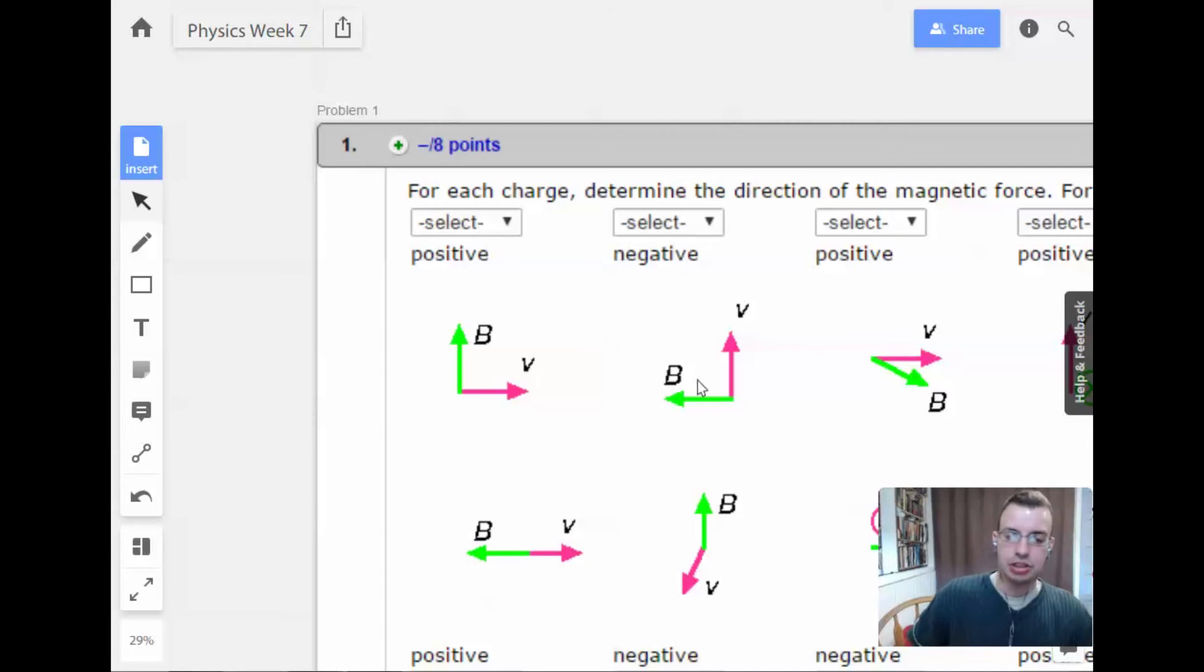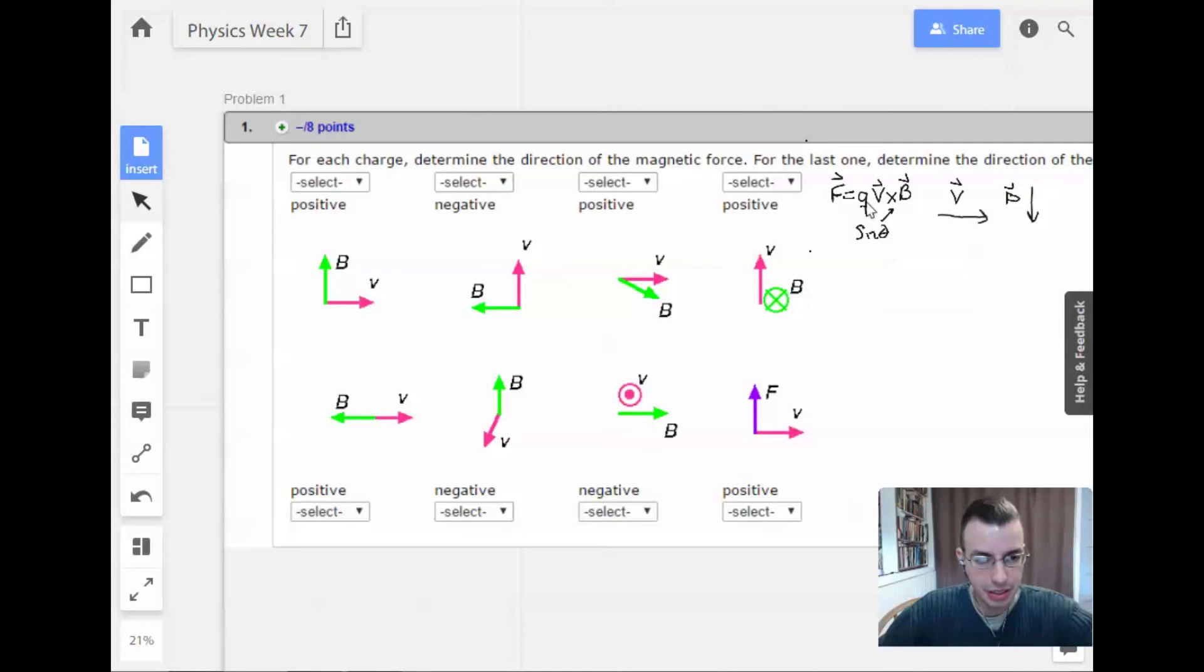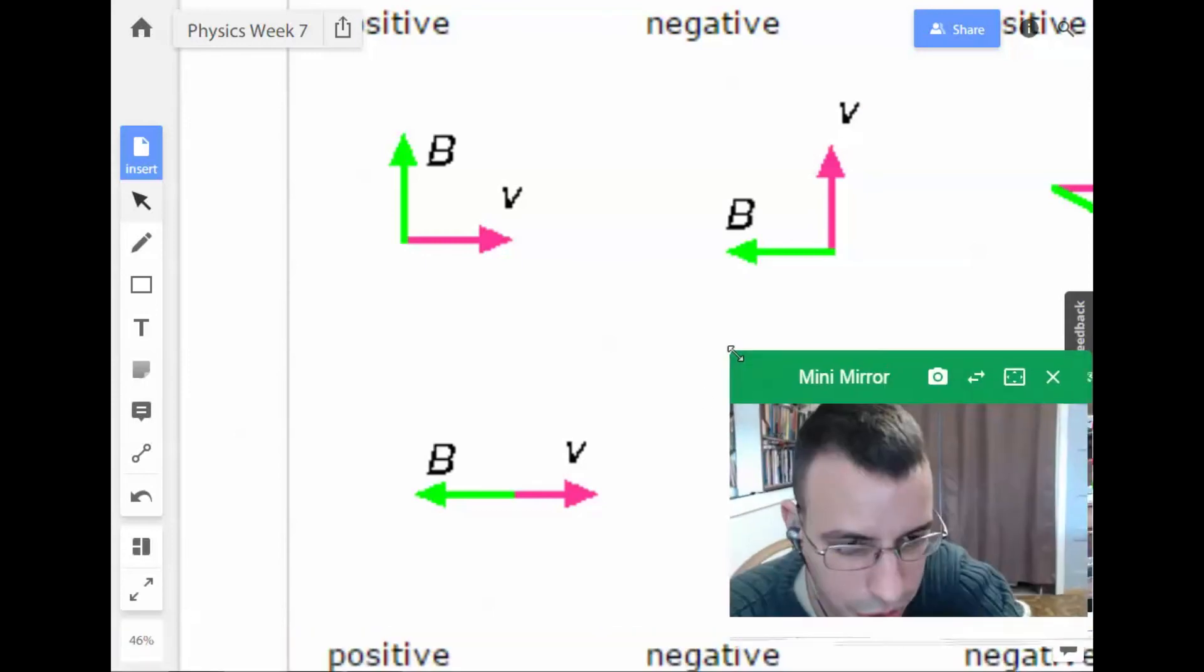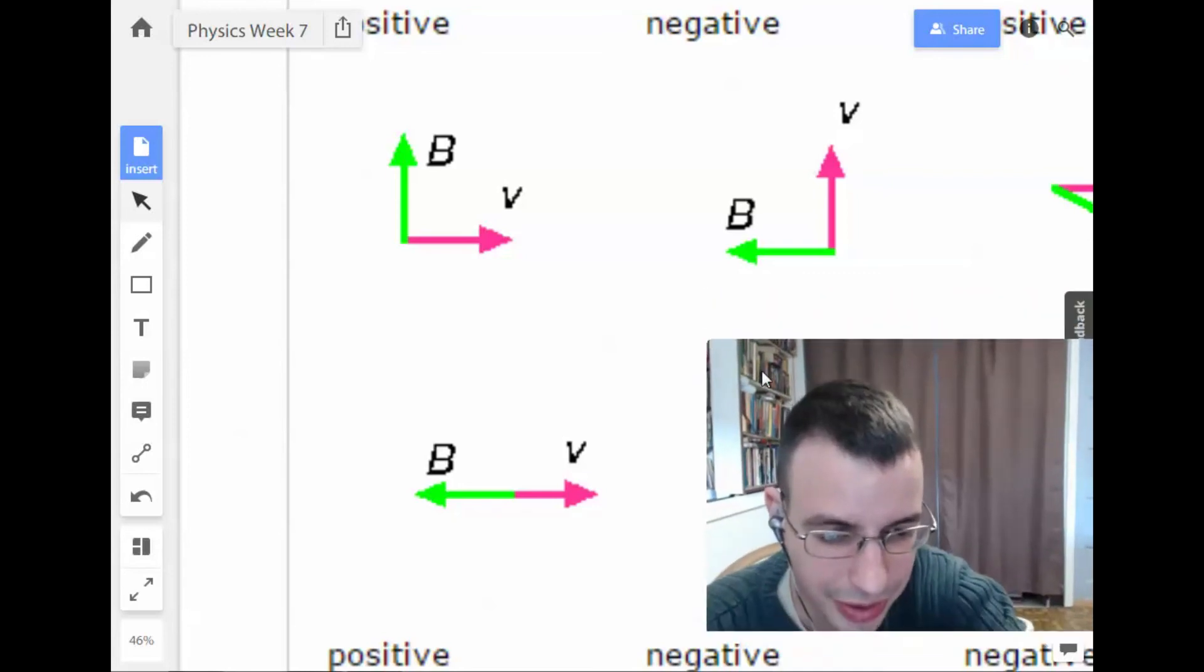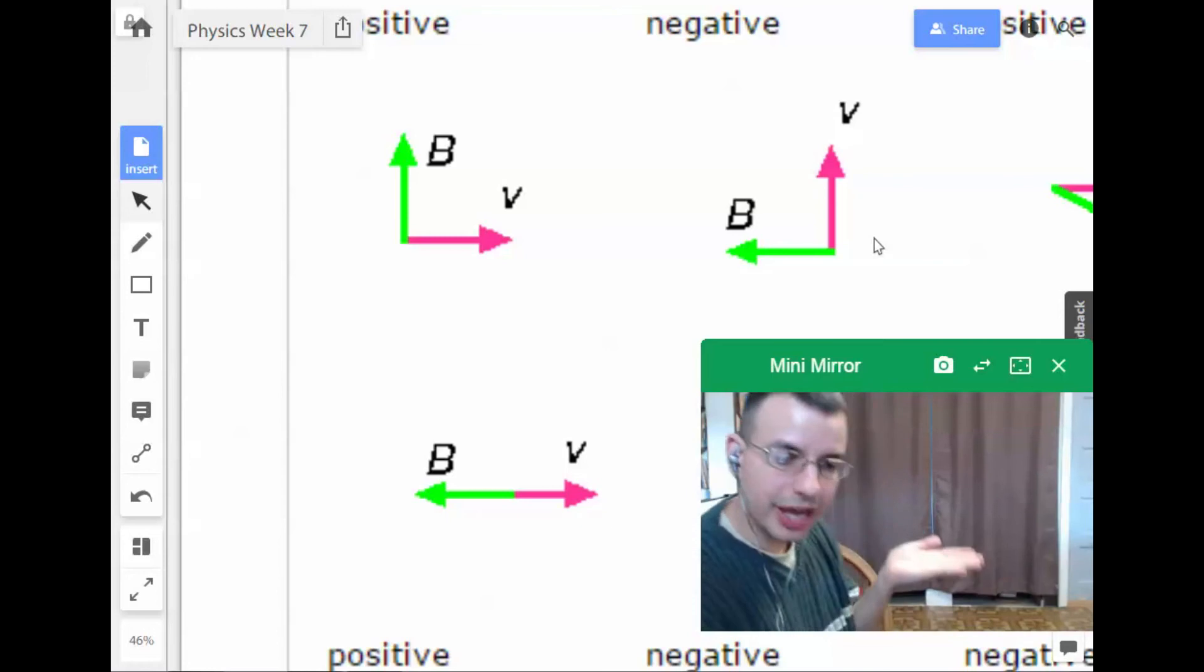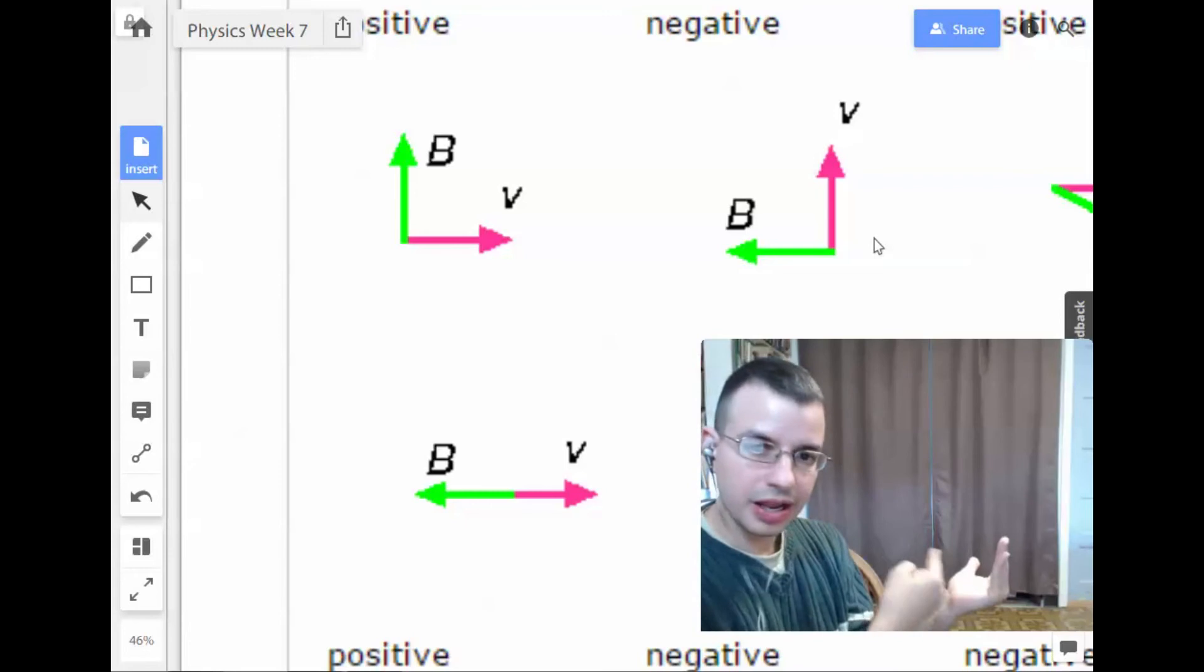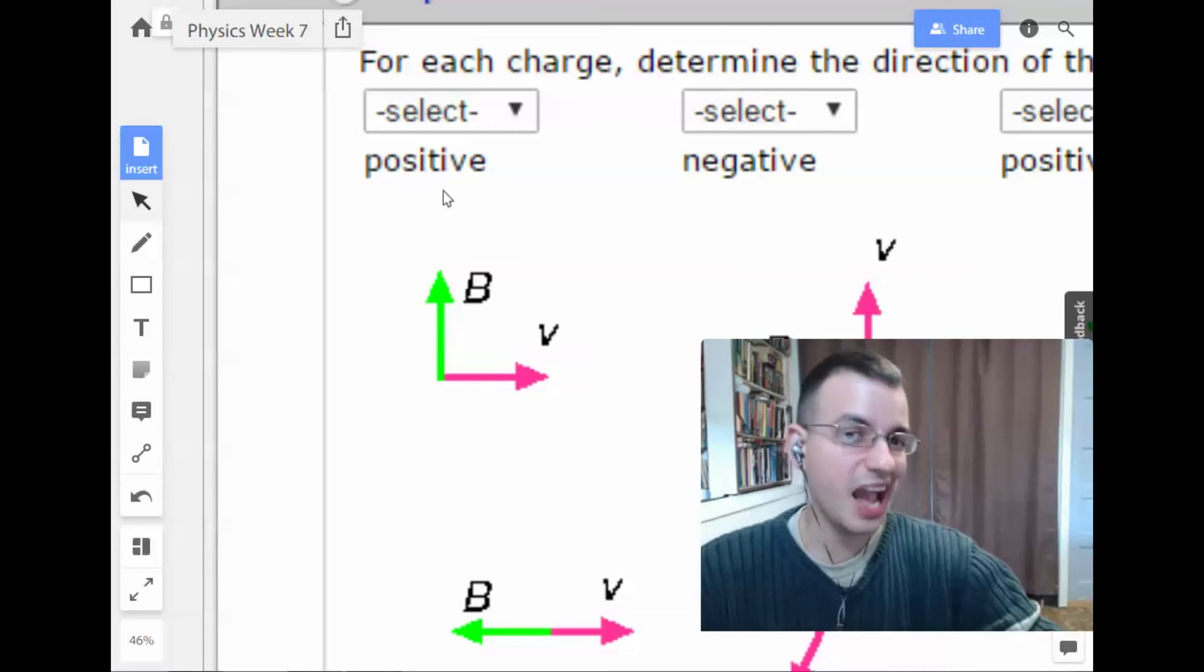So let's get started. We have the first one here. We have direction of V and B and we have a positive charge. So looking at this, we're going to do V cross B and Q. So we have V cross B, so it's going to be outwards, out of the page. And then positive, so it's actually going to be out of the page.